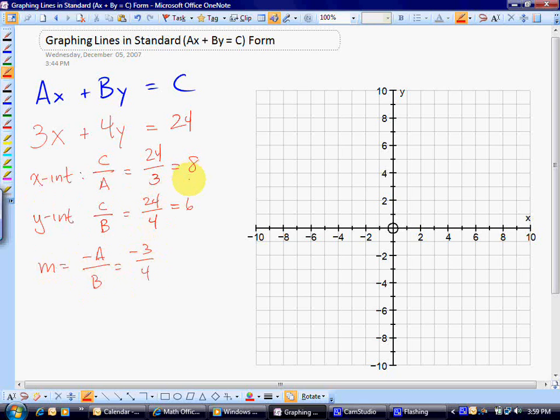So now we plot our x-intercept, positive 8. We plot our y-intercept, positive 6. We take our ruler and we draw the straight line.